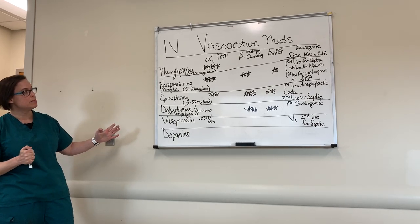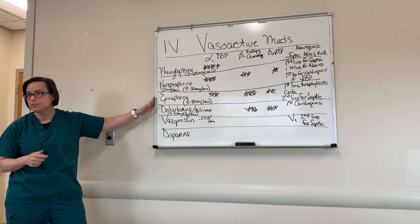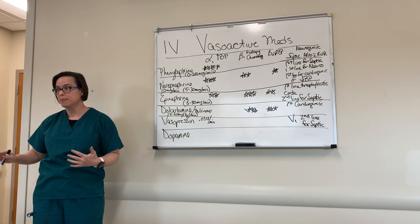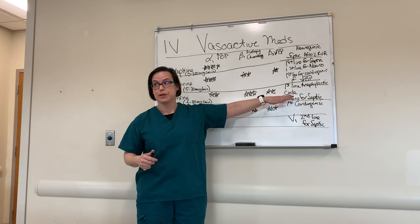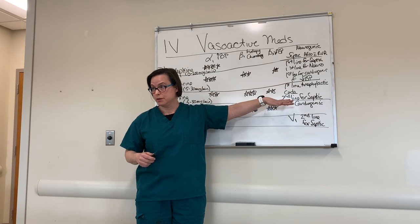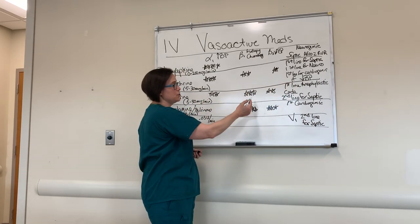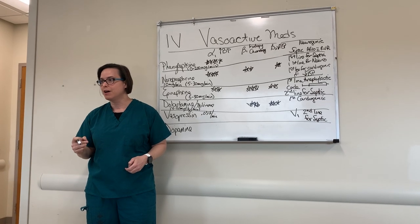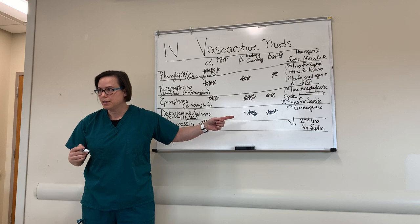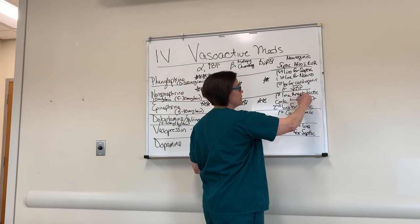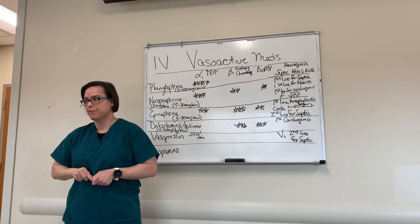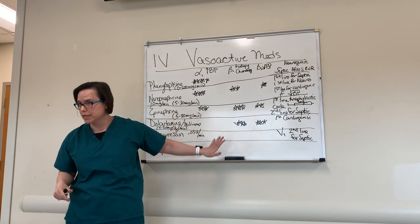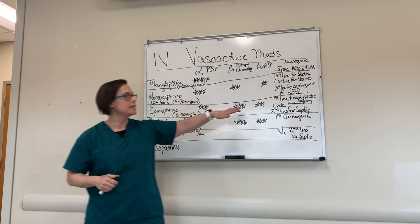One more key point: there's a lot of confusion about epinephrine dosing. The 5 to 30 micrograms per minute drip dose is for septic shock — that is not the same as what we give in code or anaphylaxis situations. In a code situation, we go to the code cart, find the auto-injector or pre-filled syringe, and it contains 1 milligram of IV epinephrine — we give that entire 1 mg dose during ACLS.